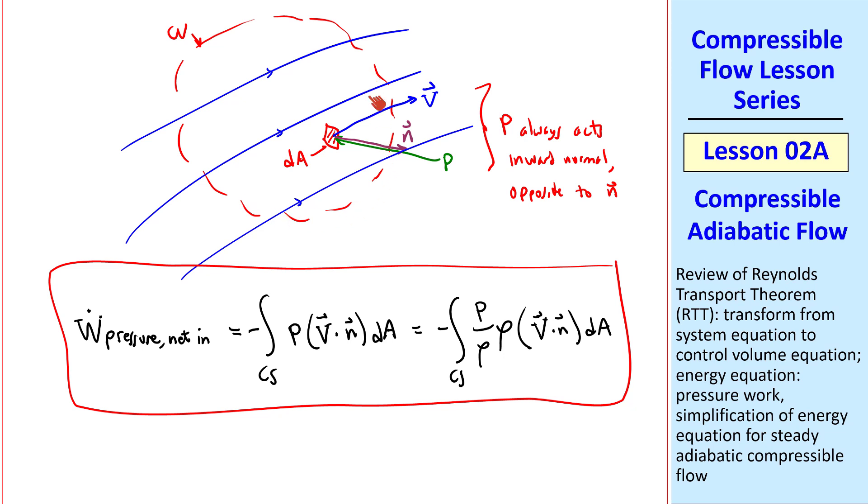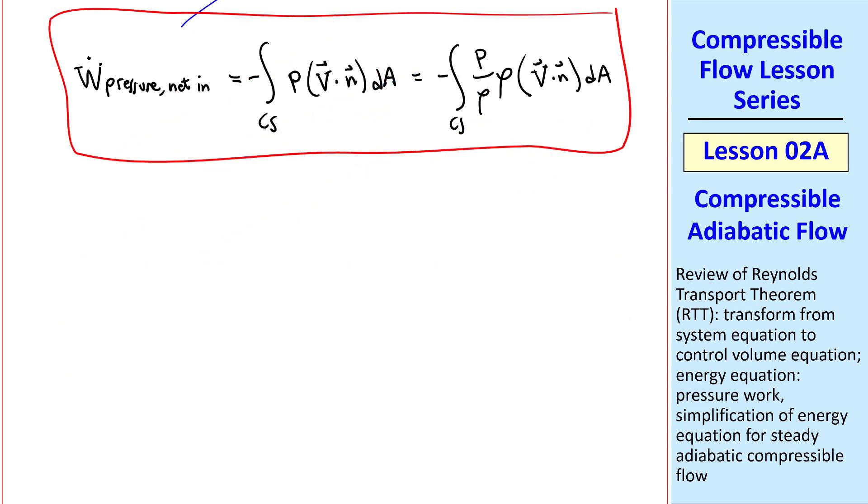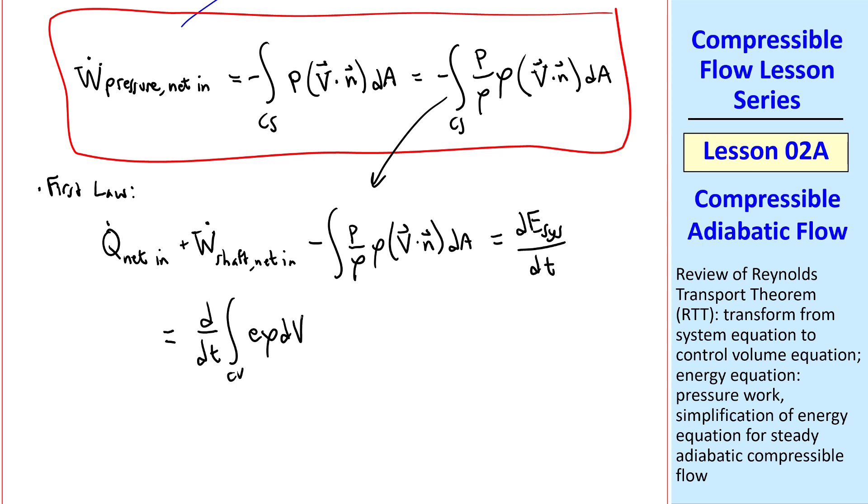Now let's return to our first law, where we had Q dot net in, plus W dot shaft net in, plus this pressure work term. That's the left-hand side of our system portion, and that's equal to dE system dt. And then the control volume part, is d dt of the control volume integral, e rho, d volume, remembering that I put a line through my capital V, to distinguish volume from velocity, plus integral over the control surface, e rho, V dot N dA. This is our general first law equation, where we've split up the work terms.